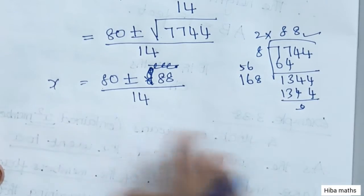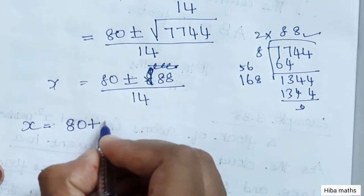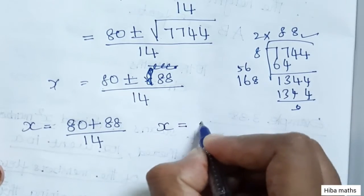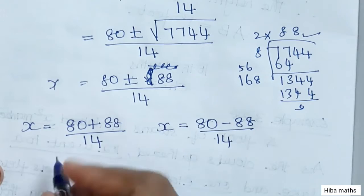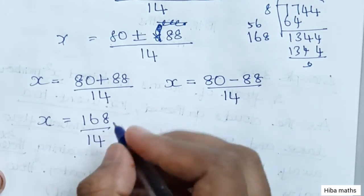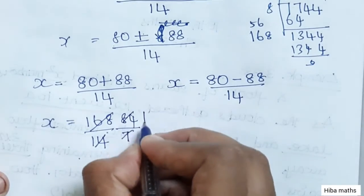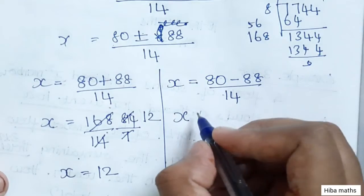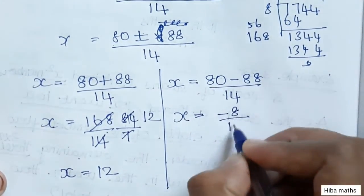This gives two values: x = (80 + 88)/14 = 168/14 = 12, or x = (80 - 88)/14 = -8/14 = -4/7.